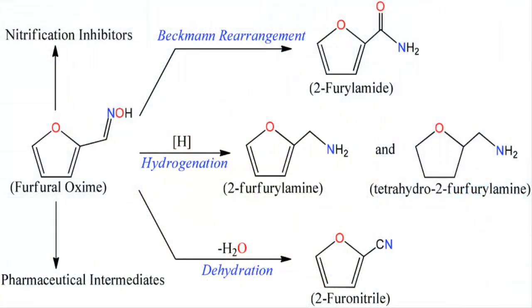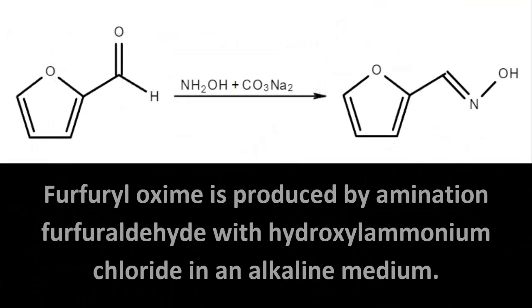Furfuryloxime is a precursor to furfurylamine used in the manufacture of pharmaceutical products and in resin production. Furfuryloxime is produced by amination of furfuraldehyde with hydroxylamonium chloride in an alkaline medium.